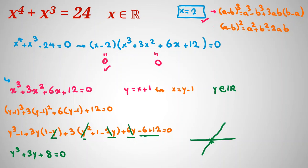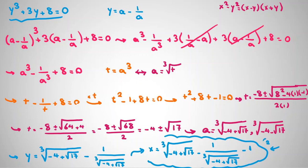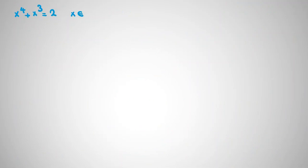So we found two answers for x: the first is x equal to 2, and the second is the expression involving cube roots. As homework, try to solve x to the 4 plus x cubed equal to 2 for all real values of x. If you have questions or want to learn more about change of variable techniques, feel free to send a message. Please subscribe, turn on notifications, and like the video. Thanks, see you next time!